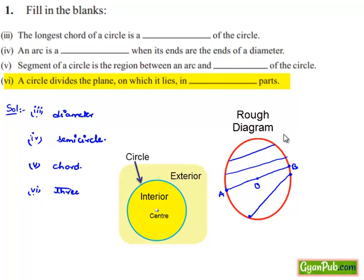the interior of the circle, the exterior of the circle, and the points on the circle itself. Therefore, a circle divides the plane into three parts.